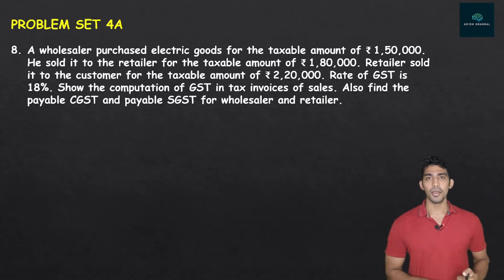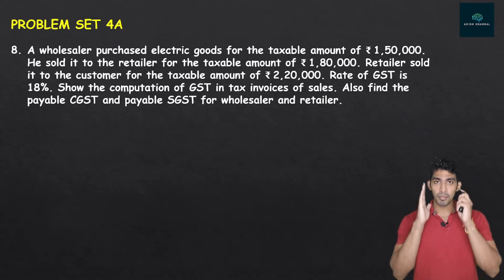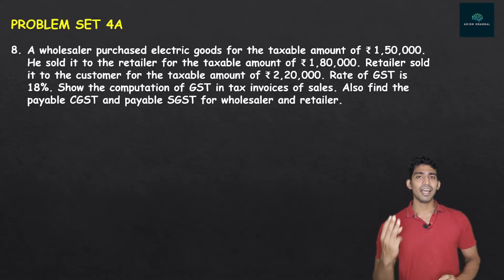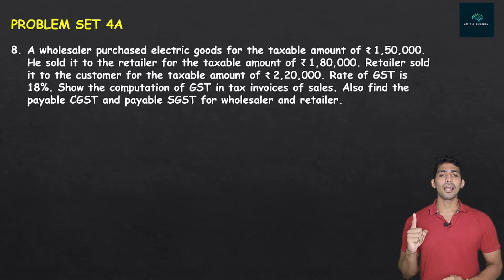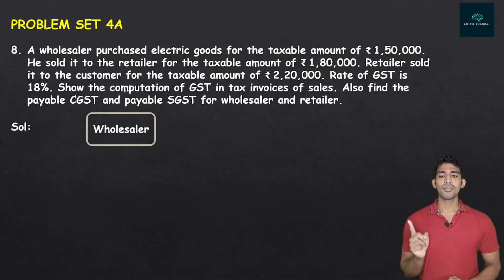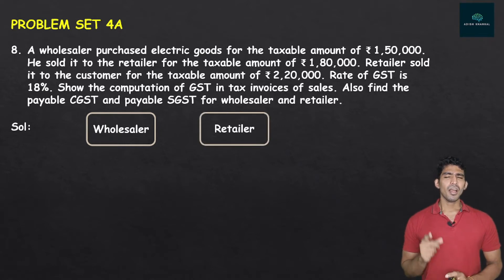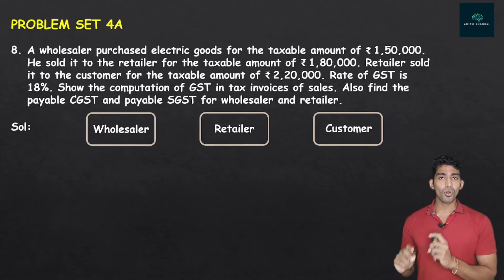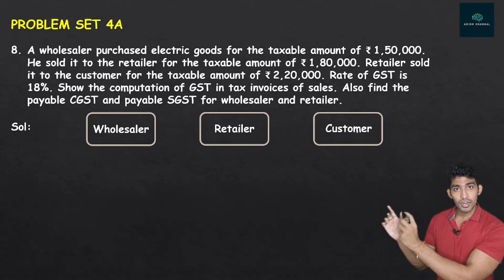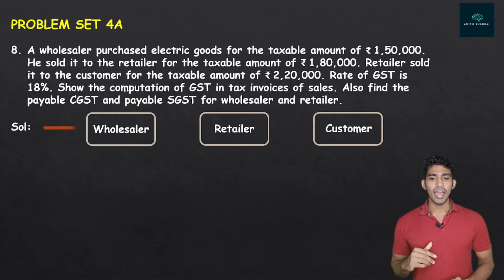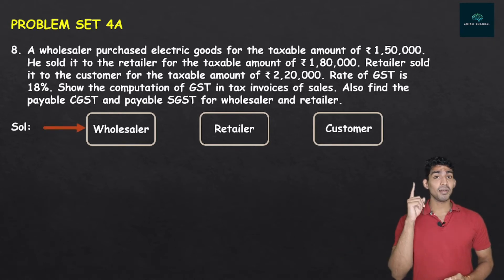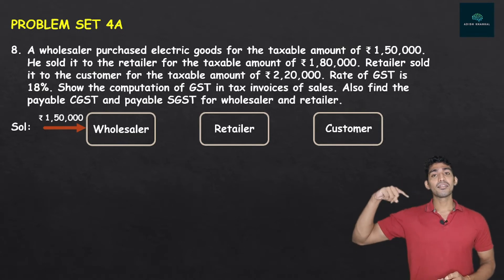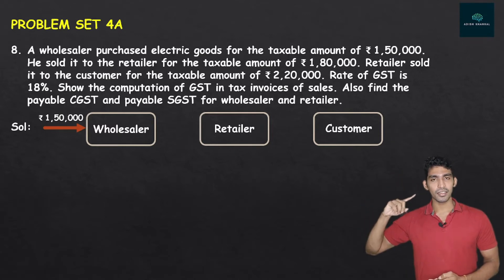This question is quite lengthy, but it is simple — you just need to focus. There are 3 entities: wholesaler, retailer, and customer. The wholesaler purchased for Rs. 1,50,000, sold to retailer for Rs. 1,80,000, and the retailer sold to the customer for Rs. 2,20,000. The customer keeps it — so the flow chart is done.